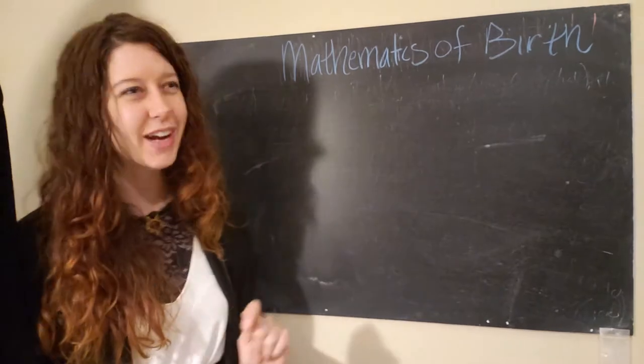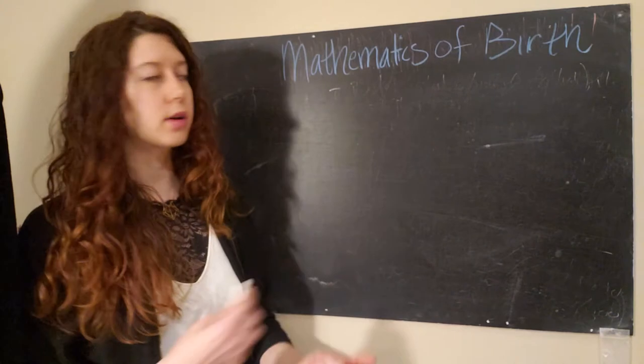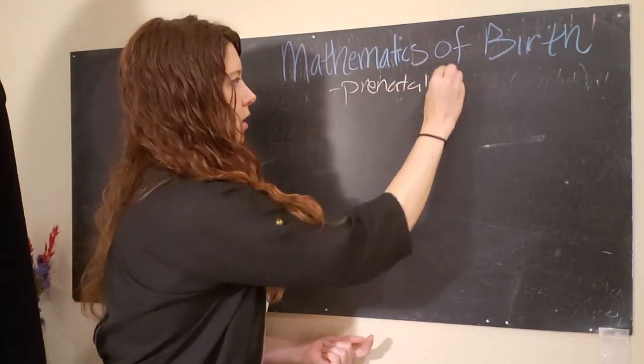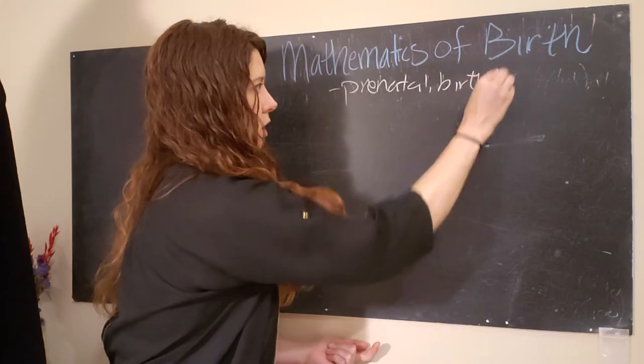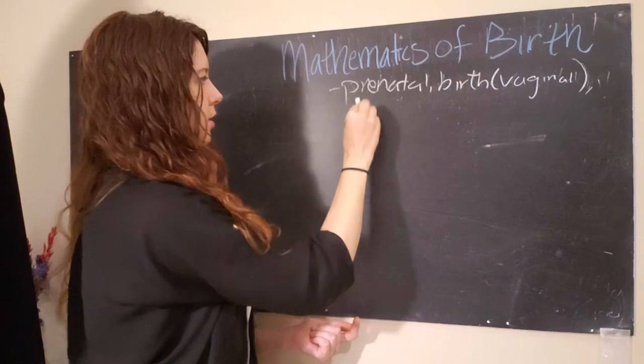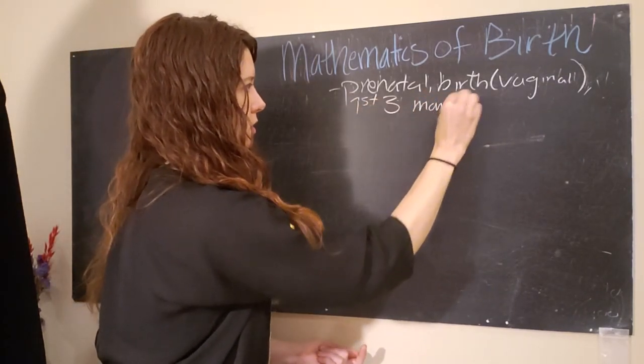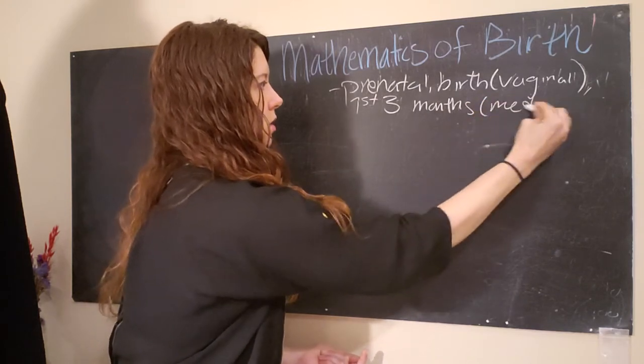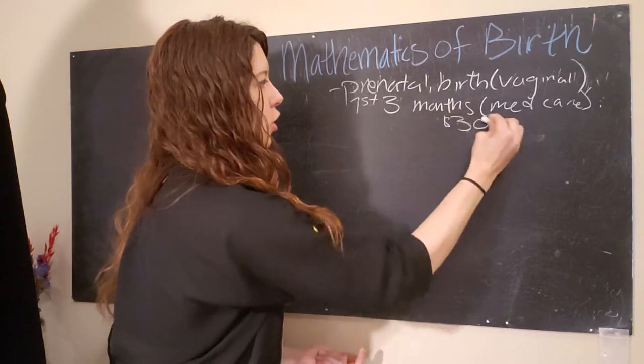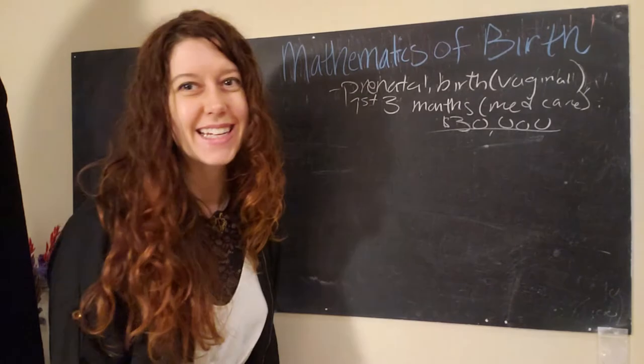So, in the United States, the cost of giving birth for prenatal care that includes prenatal care, birth, and so we're going to look at vaginal birth first, and the first three months of medical care, it's about $30,000. Wow, right? That's a lot.